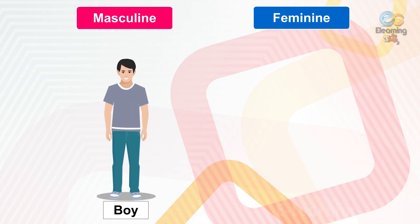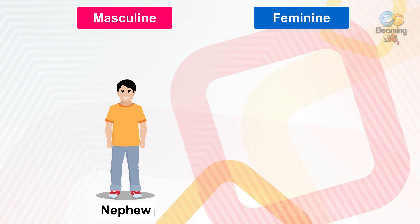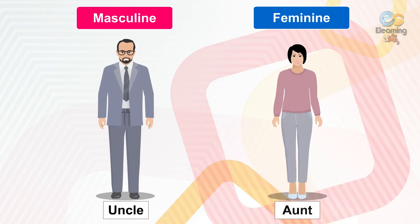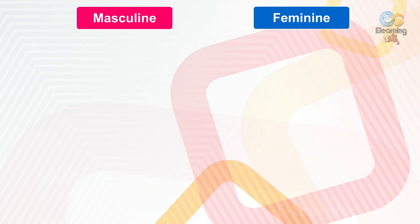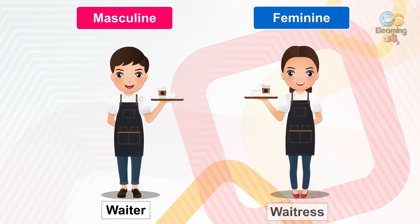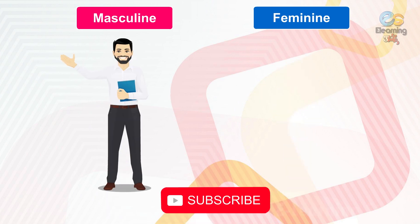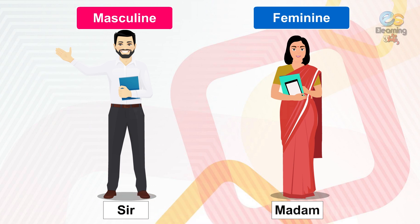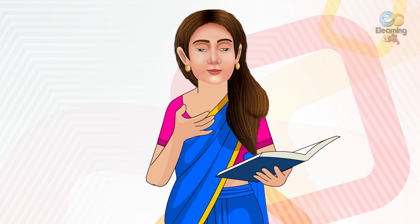Now students, let us see some more examples of masculine and feminine gender. Boy and girl, nephew and niece, uncle and aunt, master and mistress, waiter and waitress, man and woman, sir and madam.